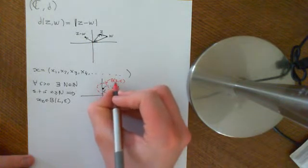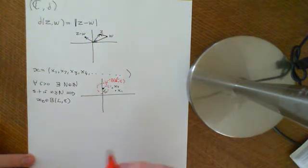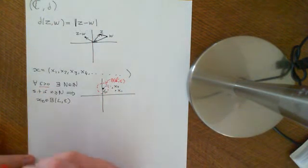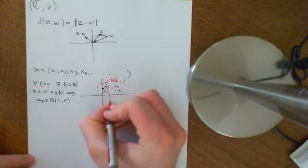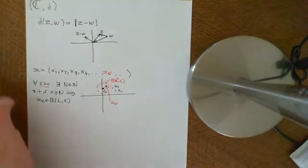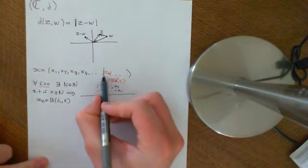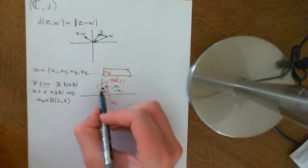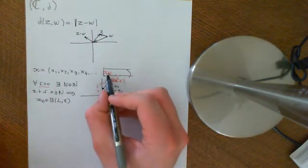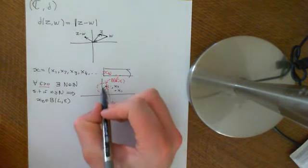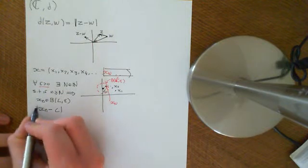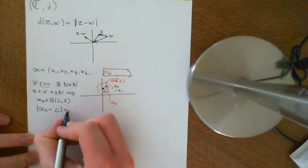This is the open ball around the point L of radius epsilon. This definition tells me that whatever radius you make this open disk — pick whichever epsilon you like greater than 0 — I will be able to find you some point x-sub-N, a term of this sequence, such that if you get to that term of the sequence or any term beyond it, it is going to be within this open disk. Another way of writing that is: the modulus of x-sub-n minus L, which is the distance of the point x-sub-n from L, is going to be less than epsilon.